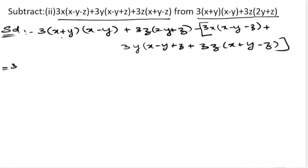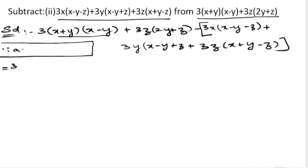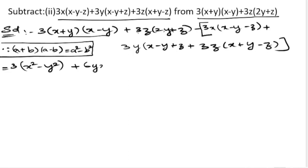We have the identity (a + b)(a - b) = a² - b². Applying the identity to 3(x + y)(x - y) gives 3(x² - y²), which is 3x² - 3y². Then 3z times 2y is 6yz, and 3z times z is 3z². So the first part gives 3x² - 3y² + 6yz + 3z².